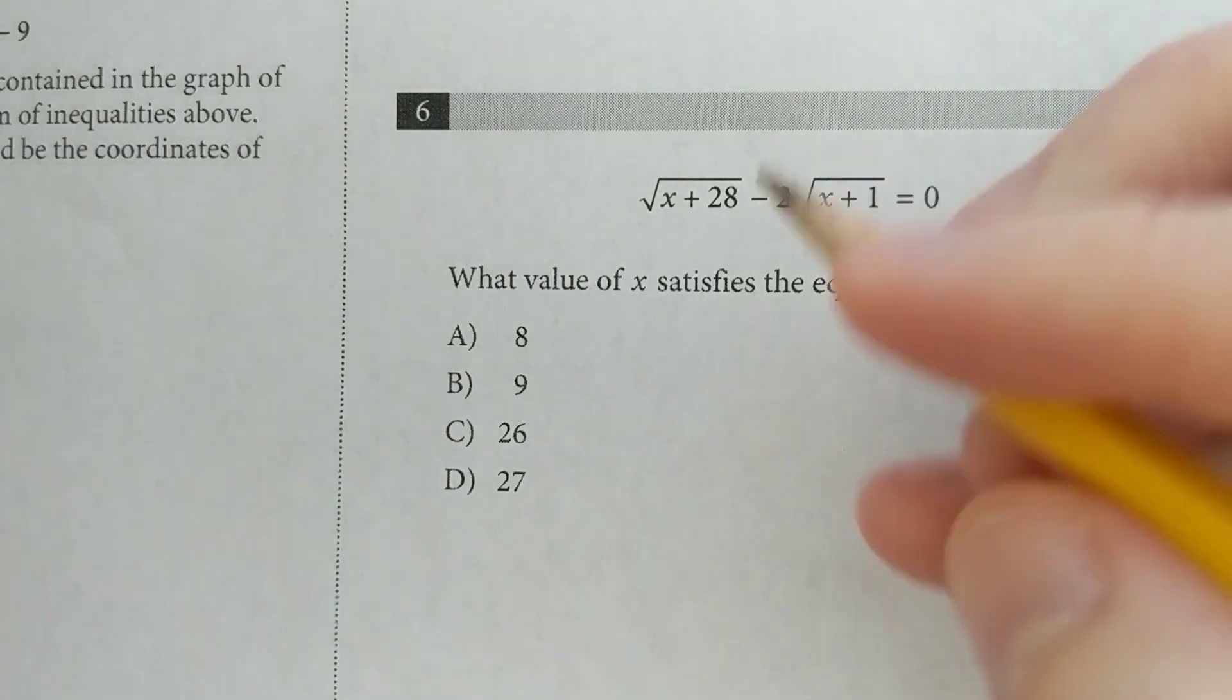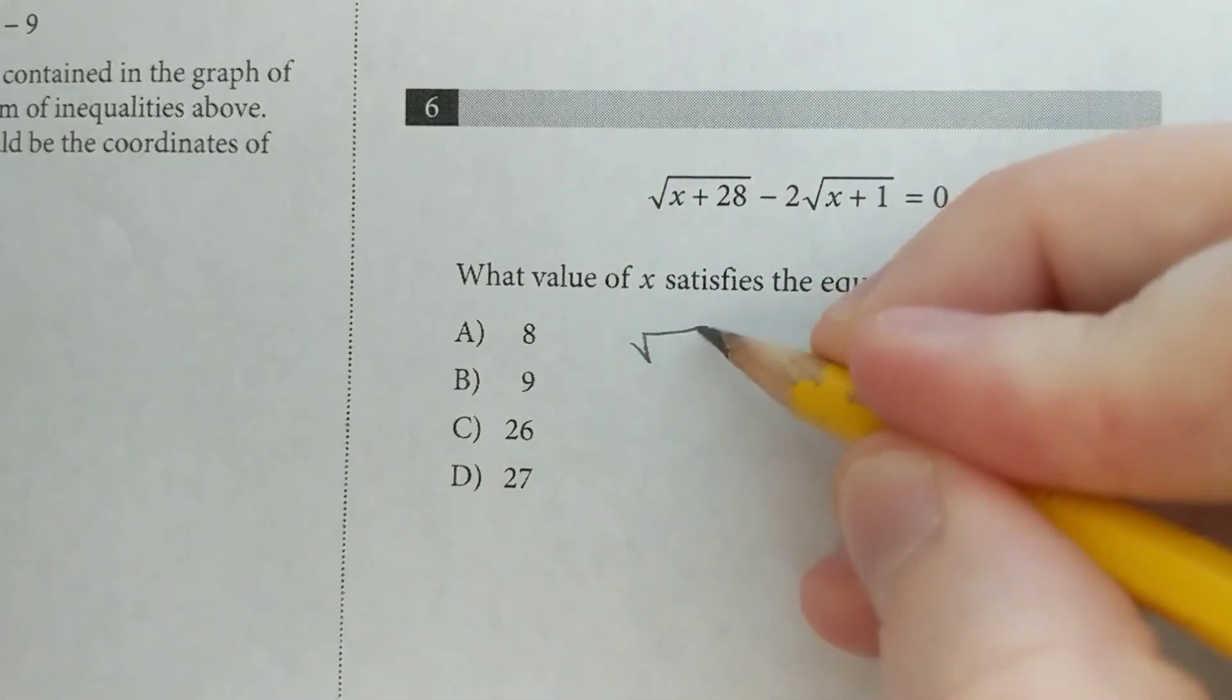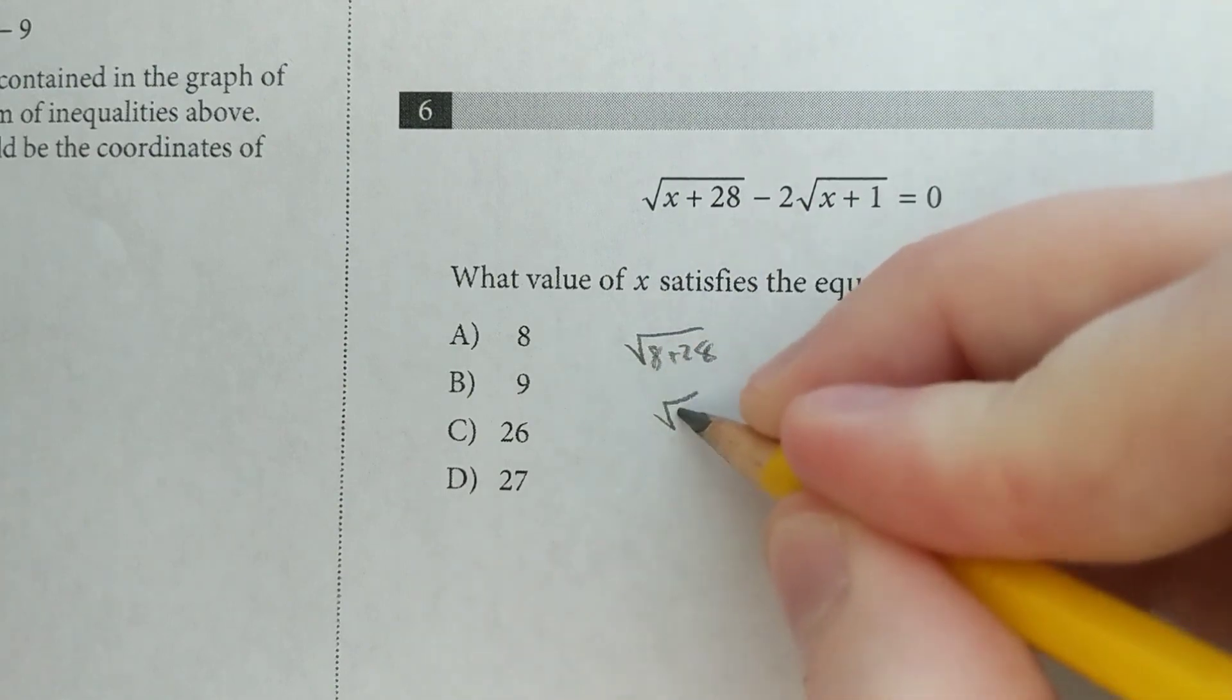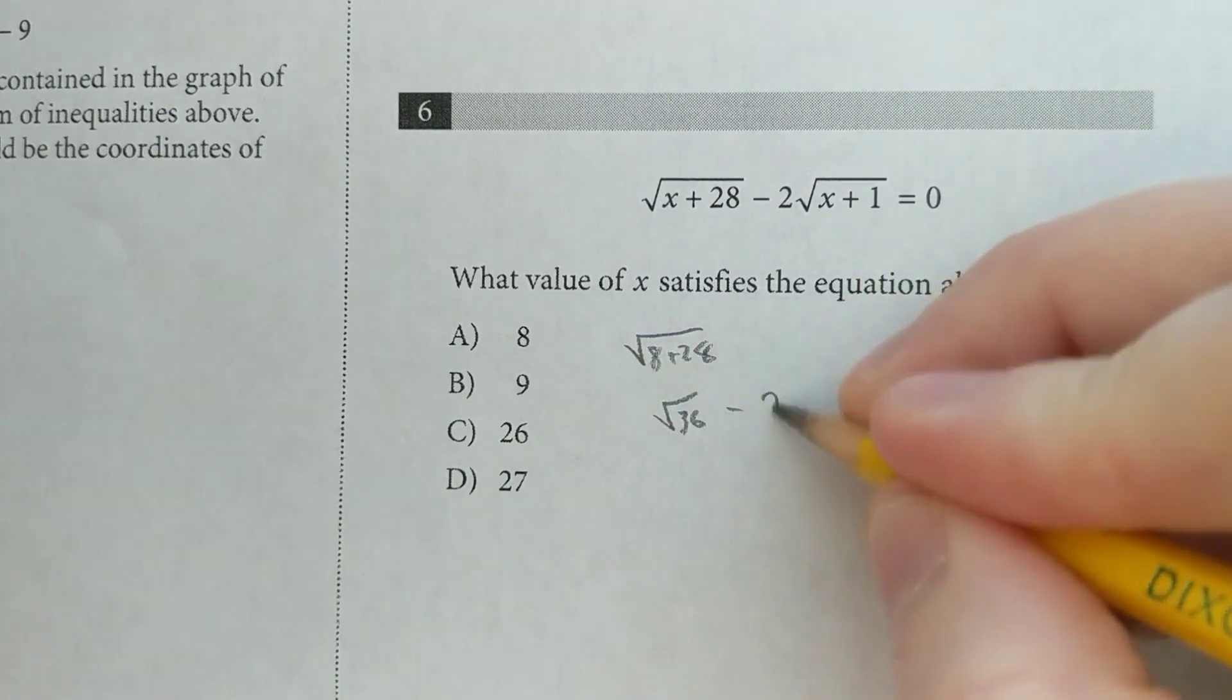Here we could bring this over and square both sides, but instead we're just going to plug in. So square root of 8 plus 28, that's the square root of 36. It's a good sign. It's a perfect square.